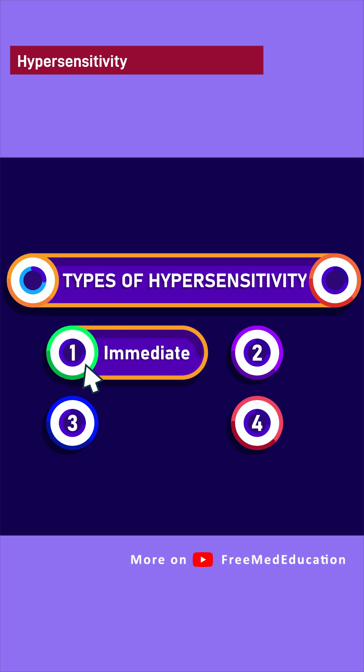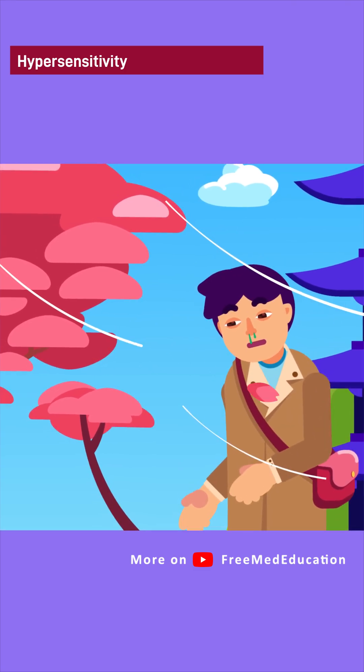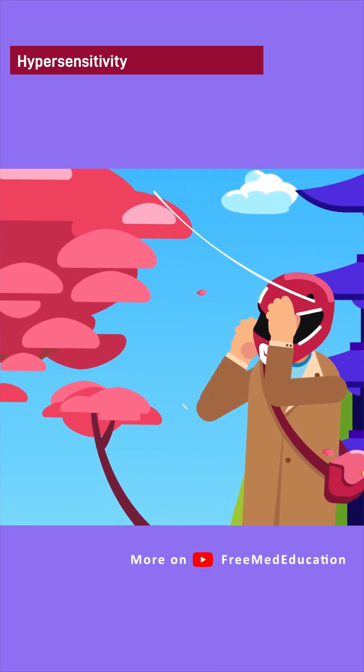Type 1, or immediate hypersensitivity. This type of hypersensitivity is mediated by IgE antibodies and mast cells.